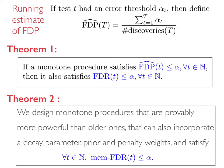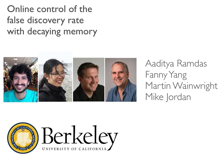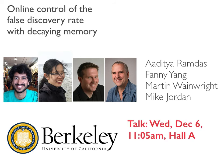Our second contribution is to design new monotone procedures that are provably more powerful than known ones, and can additionally incorporate a decay parameter, and also prior and penalty weights, while guaranteeing MEMFDR control at any time. If you would like to learn more, please come to our talk at 11am on Wednesday morning and poster number 220 that evening. Thanks!